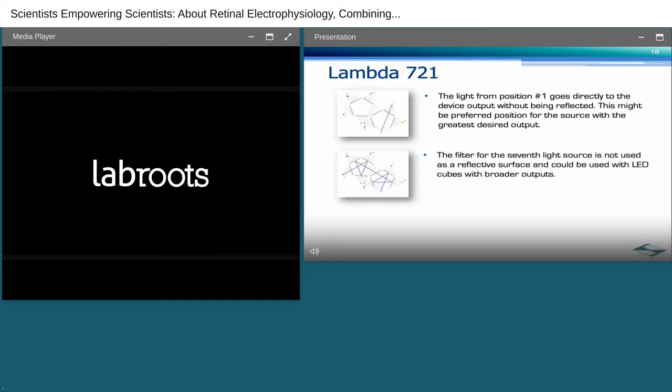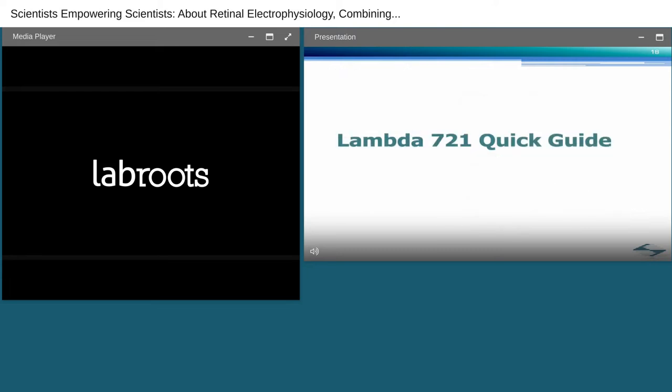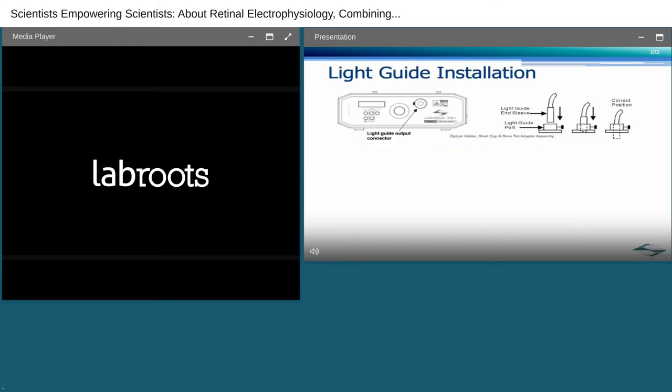Even though specific LED cube placement is not a requirement, here are a few suggestions for optimizing light output. The light from position number one goes directly to the device output without being reflected. This might be the preferred position for the source with the greatest desired output. The filter for the seventh light source is not used as a reflective surface and could be used with LED cubes with broader outputs. In configurations with fewer than seven light sources, LED cubes should be filled from lowest to highest number of reflections to ensure the greatest possible light output. These are just suggestions as you can use any placement that works best for your experimental needs.